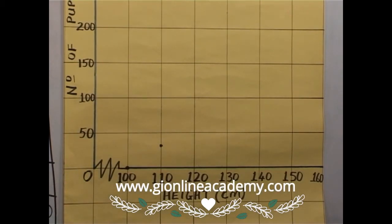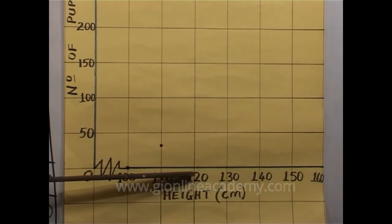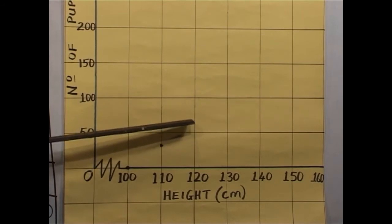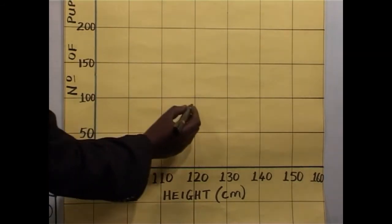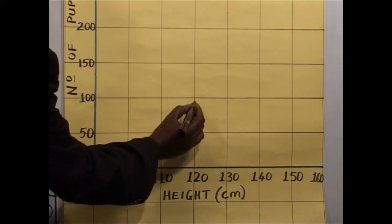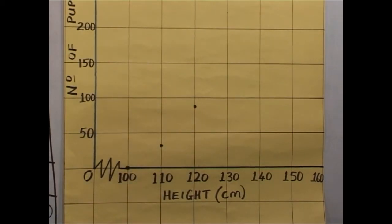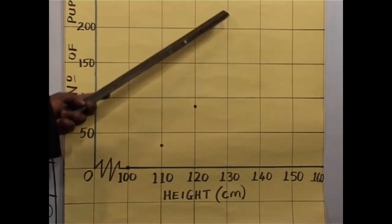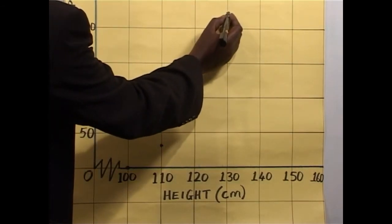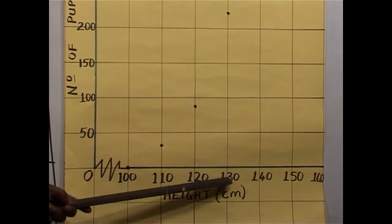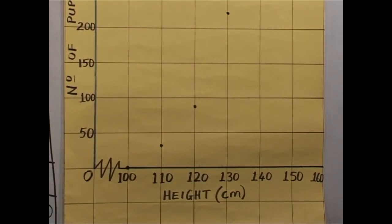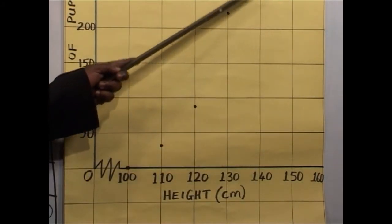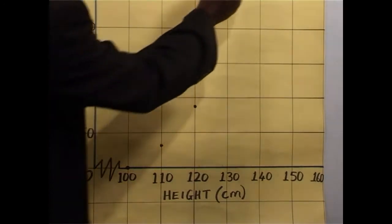The next point will be 120, 85. This is 120. I know this is 50. Halfway, that will be 75. So 85 will be slightly above. So that is 120, 85. The next point will be 130, 215. Let's go to 130. This is 150, 200. So 250. So we have 130, 215. The next point is 140, 320. So 140. This is 250, 300. 320. That will be somewhere here.